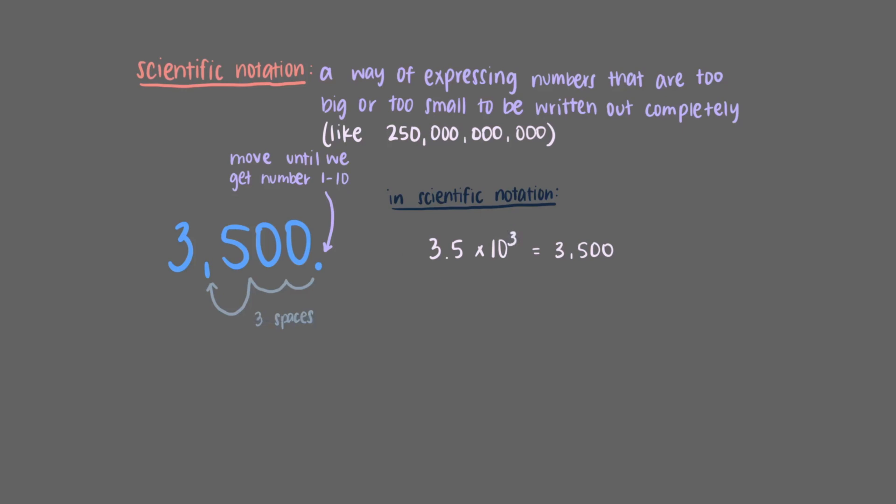Now let's look at a really small number. How would you write 0.00067 in scientific notation? We're going to use the same strategy of moving the decimal point until we have a number between 1 and 10.